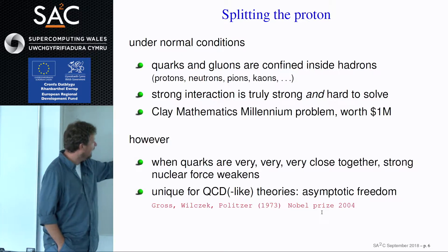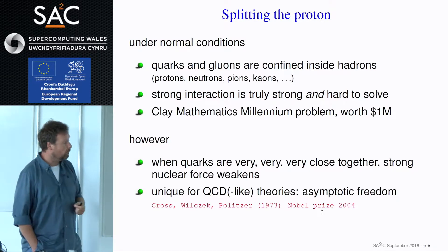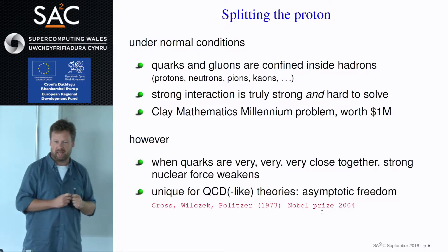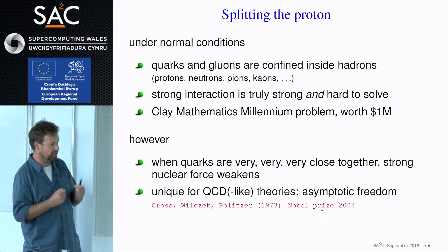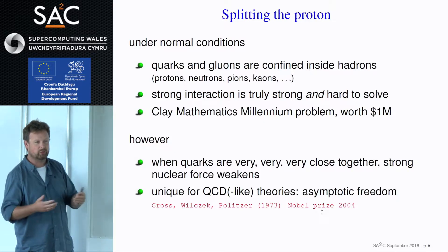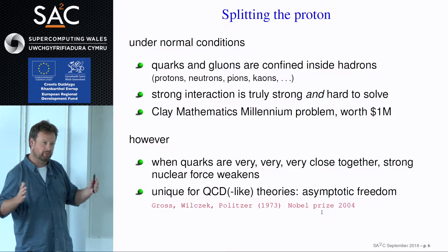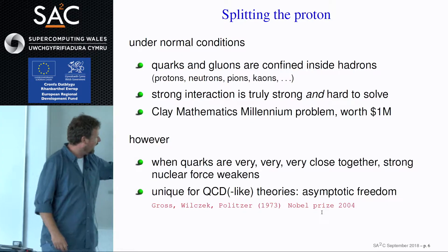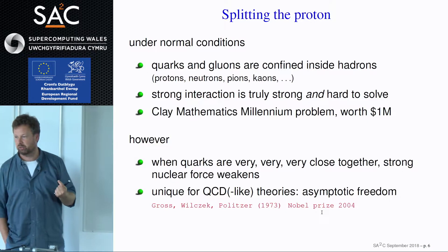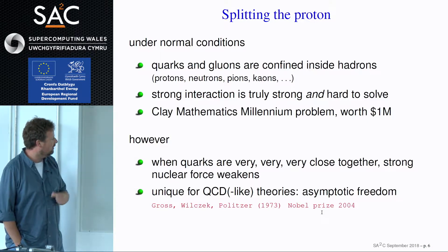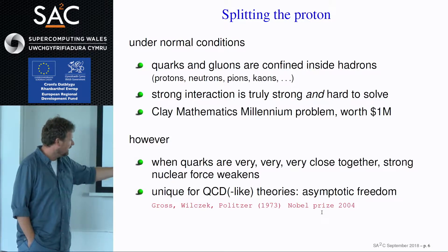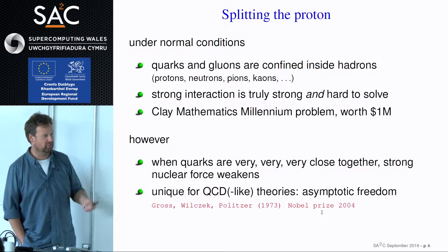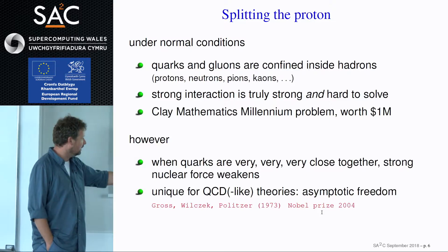Quarks are always confined. However, when quarks are very, very close together — really, really very close — they actually become weaker and weaker interacting. This is a very non-trivial result. Usually the opposite happens — electrons and photons become weaker at larger distances because they get screened by medium effects. Here it's exactly the opposite, and this has been given the name asymptotic freedom. When they're asymptotically close together, they are free. This was discovered theoretically in 1973 by these people, and it gave them the Nobel Prize in 2004.